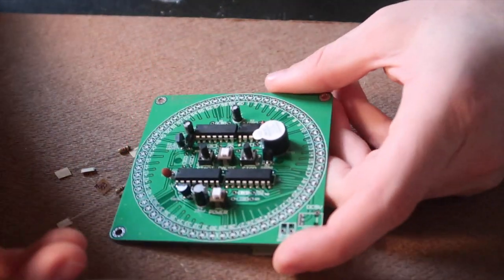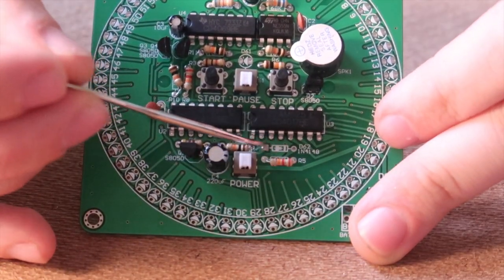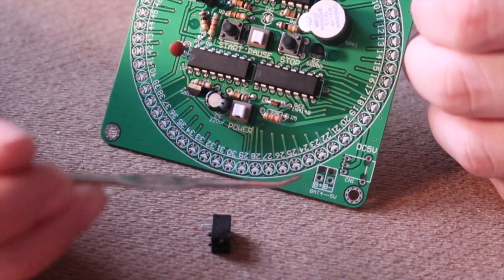Now the resistors, positions are listed on the board. The diode goes over here. The power attachment goes over here.